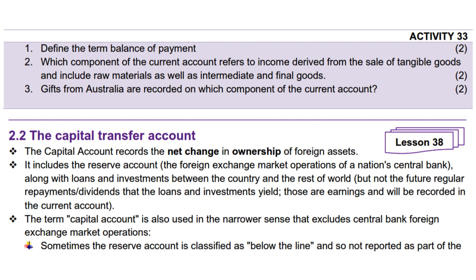Define the term balance of payment. 2 marks. The balance of payment is a systematic record of a country's transactions with the rest of the world. Question 2: Which component of the current account refers to income derived from the sale of tangible goods and includes raw materials as well as intermediate and final goods? 2 marks. Merchandise exports.